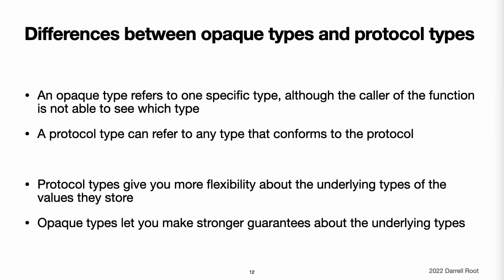Differences Between Opaque Types and Protocol Types. Returning an opaque type looks very similar to using a protocol type as the return type of a function, but these two kinds of return type differ in whether they preserve type identity. An opaque type refers to one specific type, although the caller of the function is not able to see which type. A protocol type can refer to any type that conforms to the protocol. Generally speaking, protocol types give you more flexibility about the underlying types of the values they store, and opaque types let you make stronger guarantees about those underlying types.